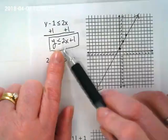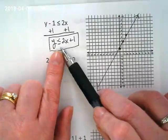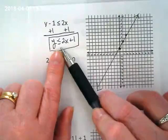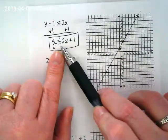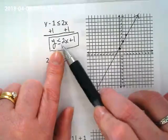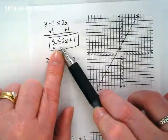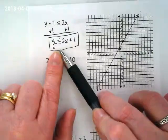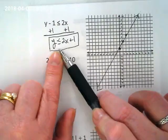Before we did that, we looked at what kind of symbol do we have. Is it going to be a solid or a dashed line? You guys told me solid because this is less than or equal to. The equal to gives us the dash. And then we need to decide, are we going to shade under or over?